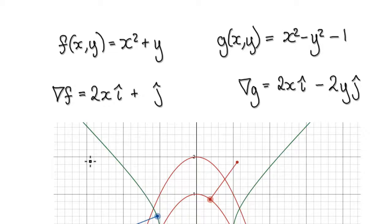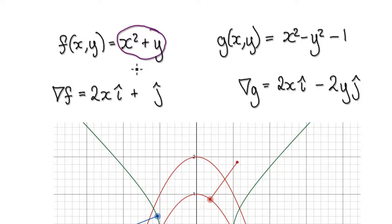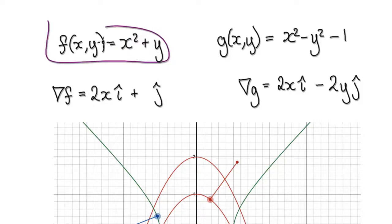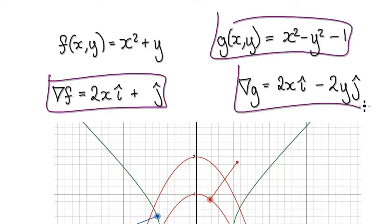Let's find the gradient vector of both surfaces. Partially differentiate with respect to X, which gives us 2, and partially differentiate with respect to Y, which gives us 1. So the gradient vector for this function is given by this, and the gradient vector for the other function is given by this.